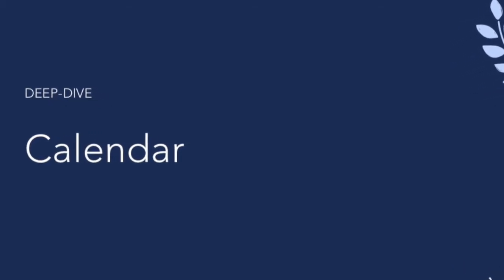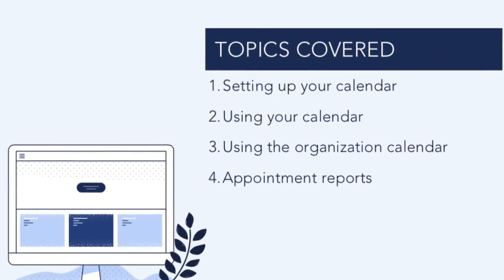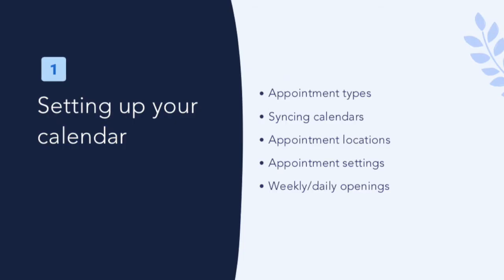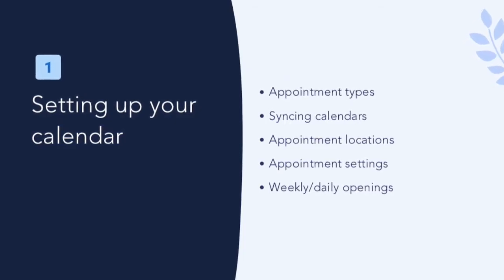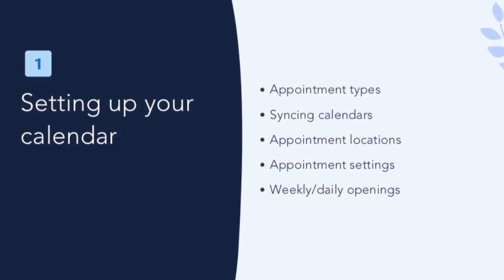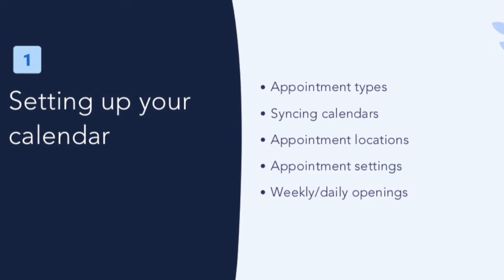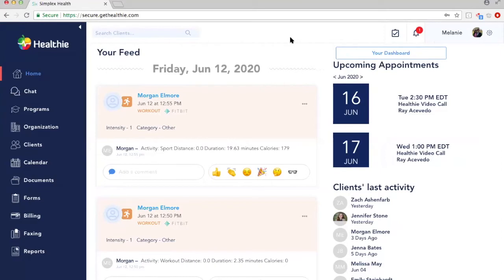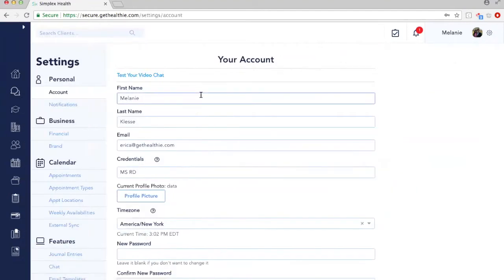Welcome to Healthy's deep dive video on calendar. Today we're going to show you how to set up and use your Healthy calendar, both for individuals and for larger organizations. First, we're going to talk about setting up your calendar and making some back-end changes so that when you're ready to schedule, everything is in place. Where we do all of our setup is under the gear icon on the top right of your main page — go ahead and select Settings. We're going to focus on the calendar settings here and walk through those together.